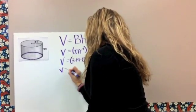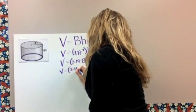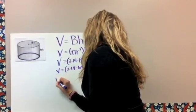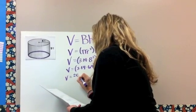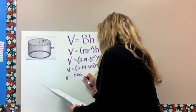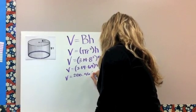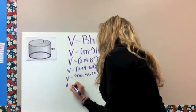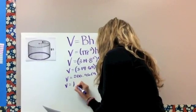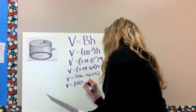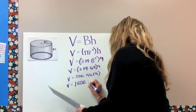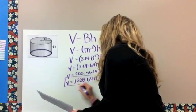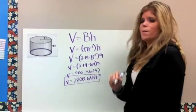Then we have 3.14 times 64 times 9, 200.96 times 9. Went ahead and pre-did this for you, and then our final answer for volume is 1,808.64 feet cubed for the volume of that cylinder.